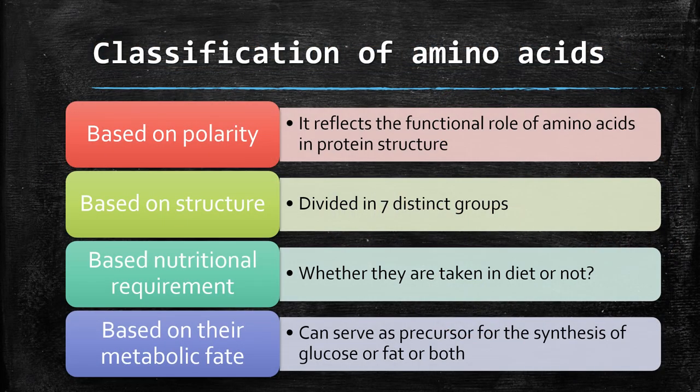Let us see the classification of amino acids. There are different ways of classifying them: based on the structure and chemical nature, nutritional requirement, and metabolic fate. Based on polarity, which reflects the functional role of amino acids in protein structure, they are divided into seven distinct groups. Based on nutritional requirement — whether they need to be taken in the diet or not. Based on their metabolic fate — which amino acids can serve as precursors for synthesis of glucose, fat, or both. So amino acids are classified in four different ways.